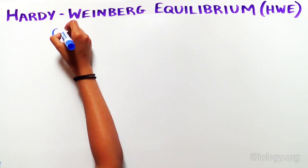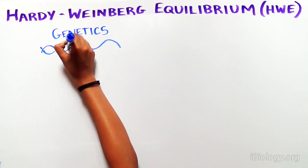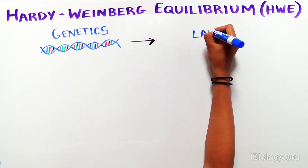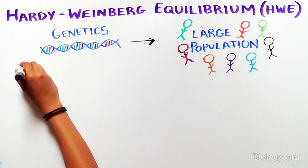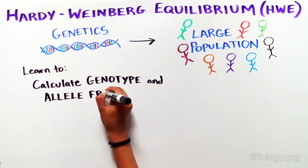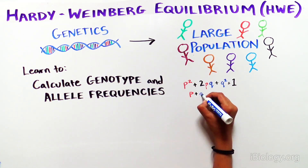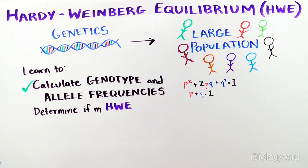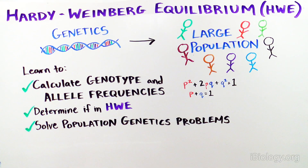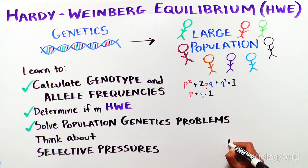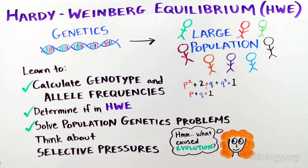Overall, Hardy-Weinberg equilibrium is a way to apply Mendelian genetics — the idea that traits like coat and eye color in squirrels get inherited — to large populations, and to figure out whether that trait is undergoing evolution. Through this lesson, you have learned how to calculate genotype and allele frequencies over several generations and use these calculations to determine if a population is or is not in Hardy-Weinberg equilibrium. If it is in equilibrium, you can use Hardy-Weinberg equations to solve population genetic problems; if it is not, you can start thinking about what selective pressures are causing evolution and how they may shape future generations.